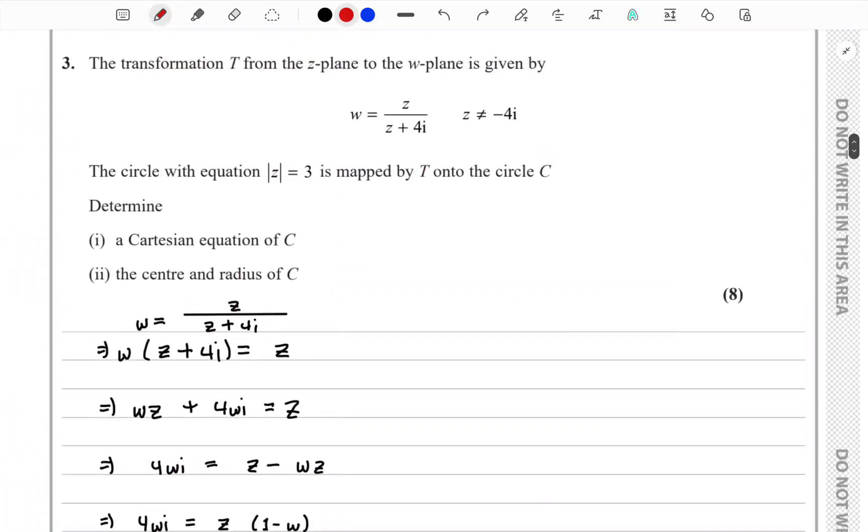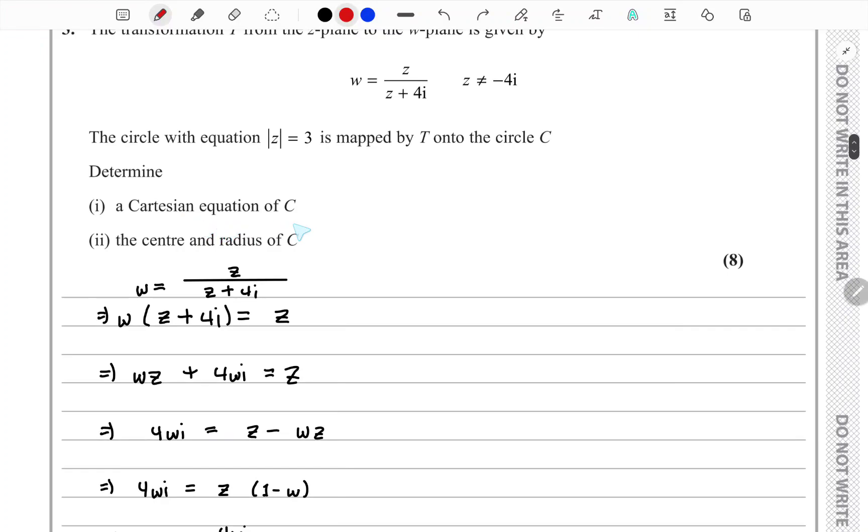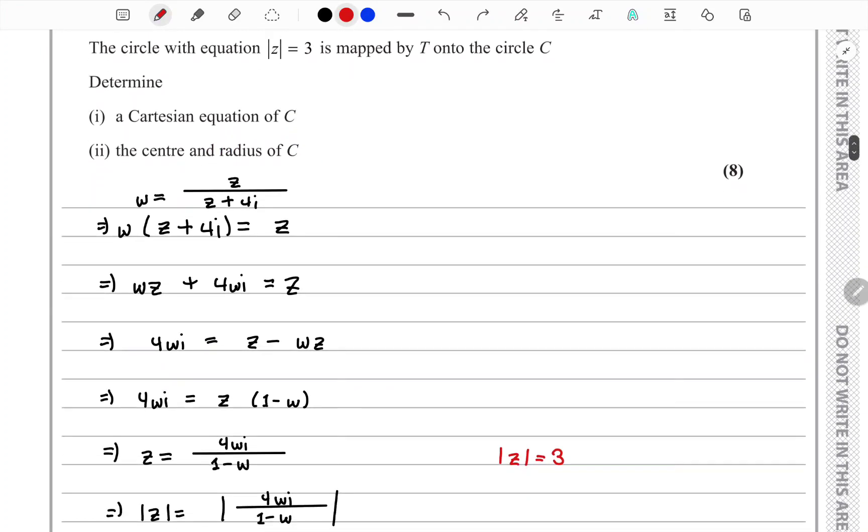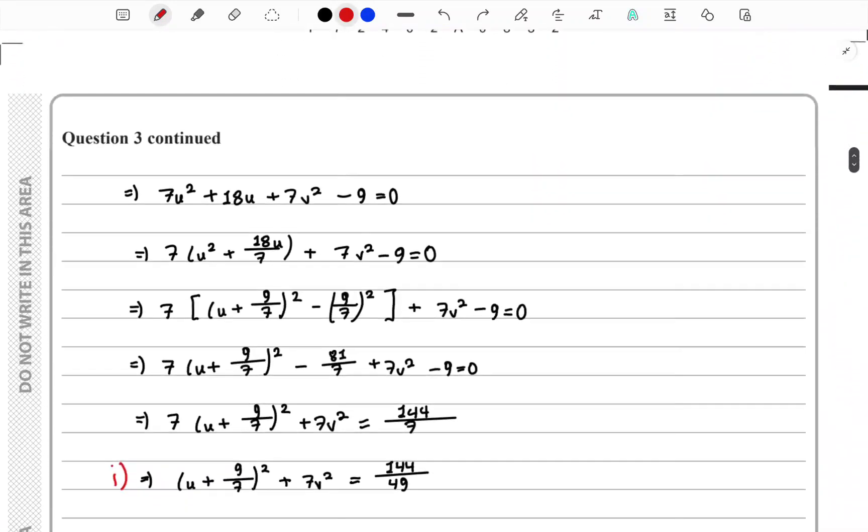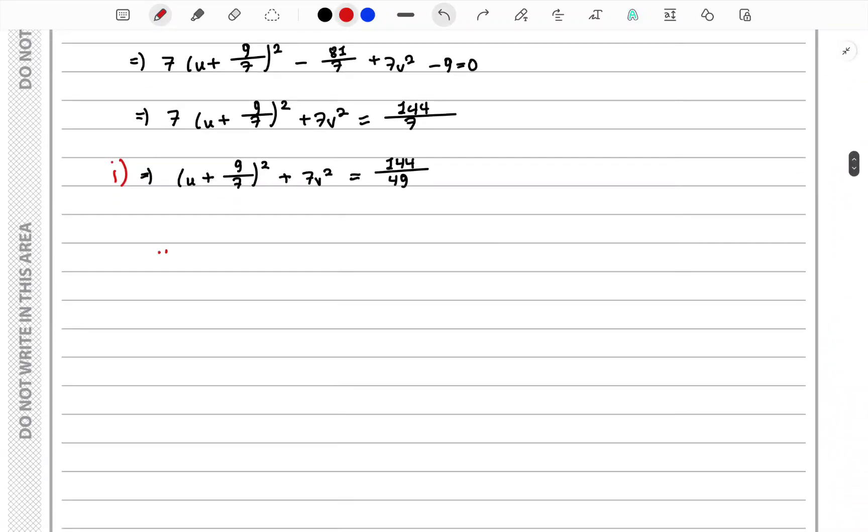We have already achieved part 1, which is to find the Cartesian equation of C. From the Cartesian equation we need to find the center and radius of C.